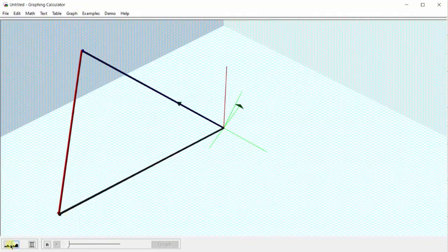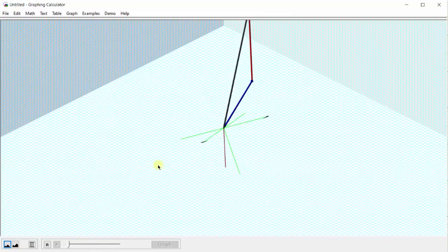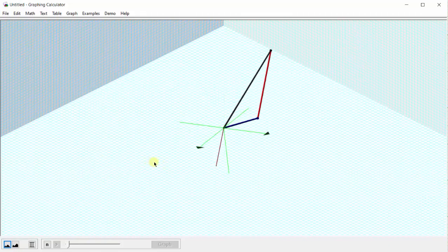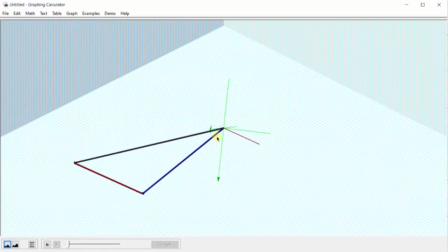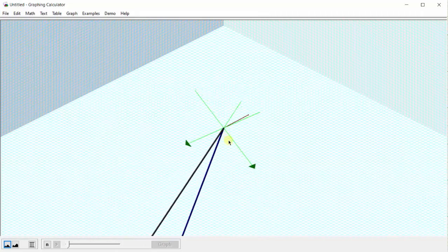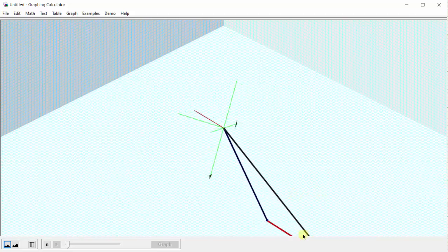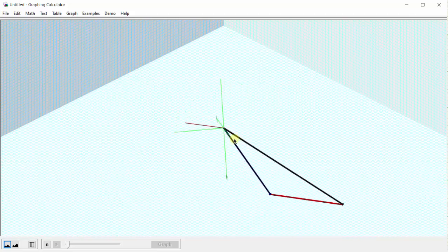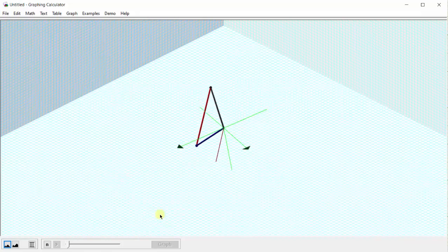Let's go ahead and zoom out and animate the vectors. Again, the blue vector is three times vector u, and the red vector is negative two times vector v, and the black vector is the vector x, which is the linear combination of vector u and v. I hope you found this helpful.